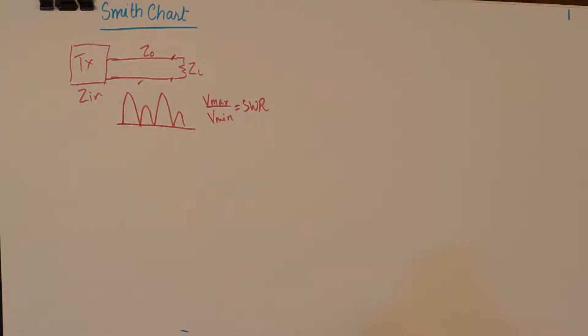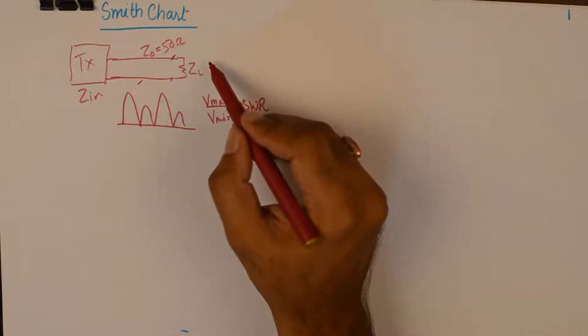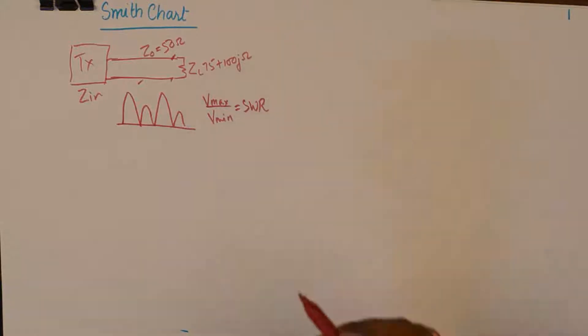Now, this phenomenon can only be avoided if there is a matching between the characteristic impedance and the load impedance of the system. Let us say our characteristic impedance is 50 ohms and the load impedance is 75 plus 100J ohms.